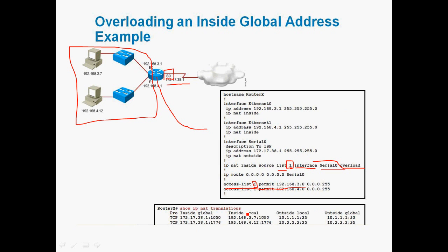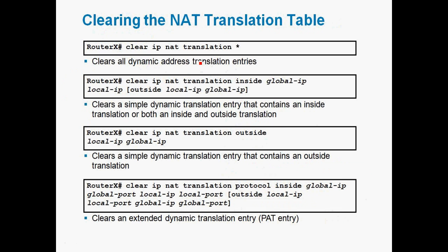Using 'show ip nat translation', we can see that all IP addresses from the 192.168.3.0 and 4.0 networks are translated into the single public IP address 172.17.38.1. This is PAT, also called dynamic overloading, where port numbers are also translated.